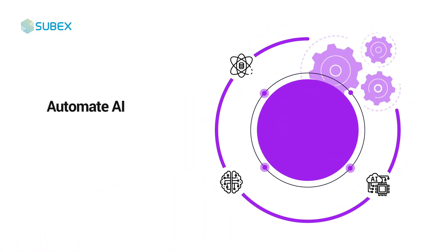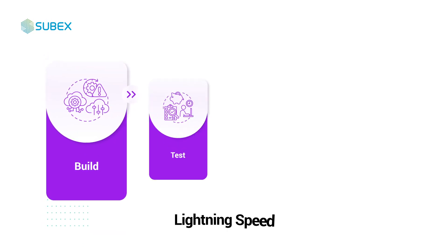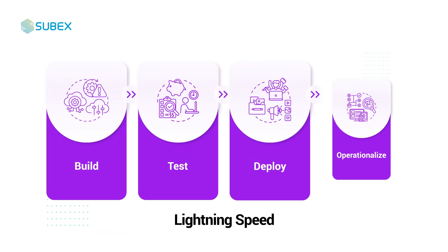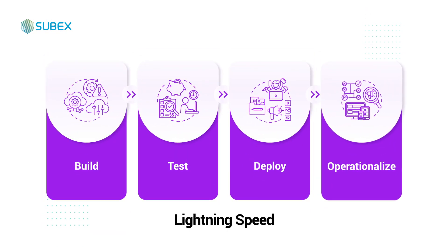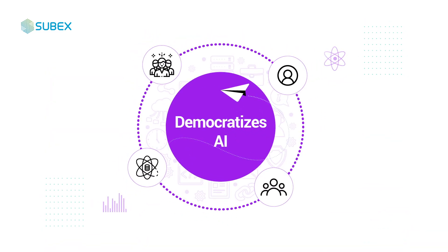Hypersense AI Studio is an end-to-end data science studio that provides AI automation capabilities across the entire data science cycle. It allows business users to build, test, deploy and operationalize the models at lightning speed. Our AI Studio democratizes and widens accessibility to AI and data science across business users in an organization and empowers them to become citizen data scientists.